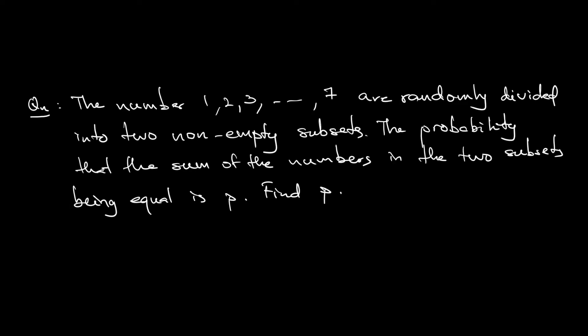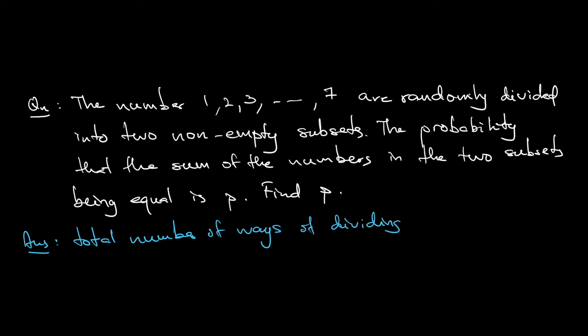So how would we do this? Let's try together. The approach to solve this combinatorics question: first thing first, I want to find how many ways of dividing into two non-empty subsets. So the total number of ways of dividing the seven numbers into two non-empty subsets.